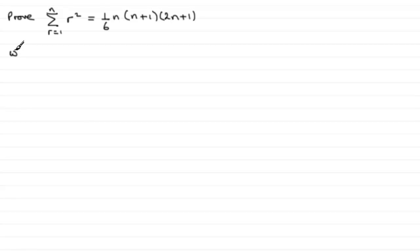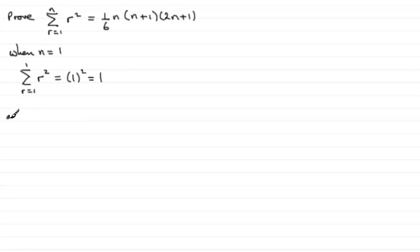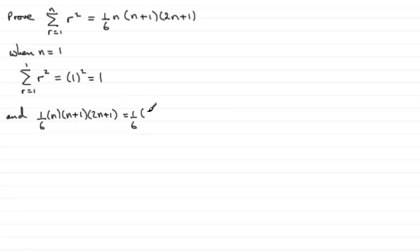When n equals 1, we have the sum of r squared from r equals 1 to 1, which equals just 1 squared, which clearly is 1. Now we check whether the right hand side also comes to 1 when we substitute 1 in for n.